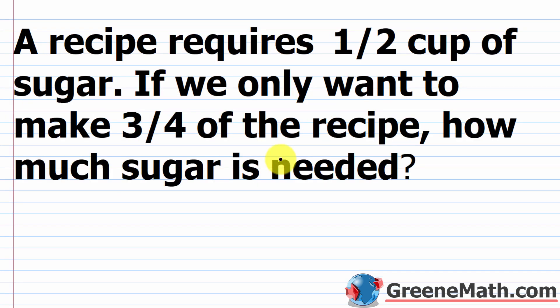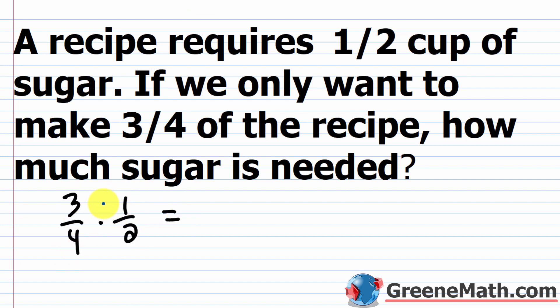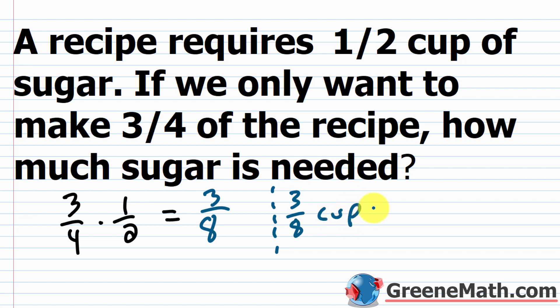A recipe requires one-half cup of sugar. If we only want to make three-fourths of the recipe, how much sugar is needed? Multiply three-fourths times one-half. Nothing cancels here — three, two, one, four share no common factors across numerators and denominators. So three times one equals three over four times two equals eight. You would need three-eighths cup of sugar.